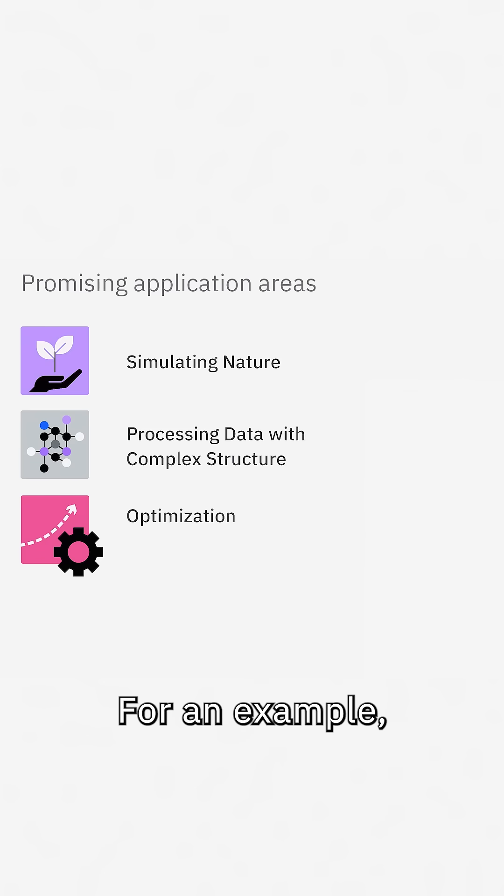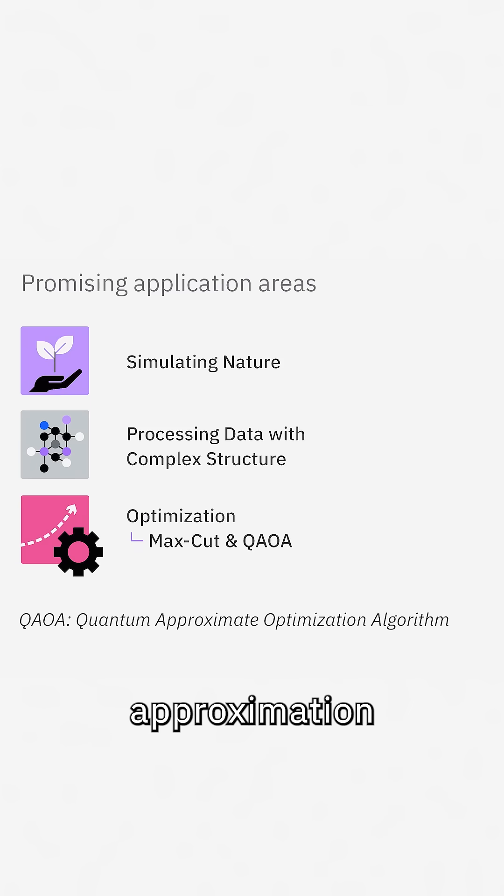For an example, you can imagine how difficult it can be to compute optimal flight paths or delivery routes across the country. In this lesson, we are going to explore a particular optimization problem called max cut, which we are going to solve by using a quantum algorithm called the quantum approximation optimization algorithm, or QAOA.